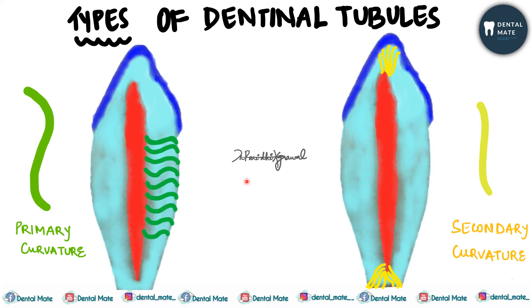It is doubly curved, has a convex course, and follows a gentle sigmoid, S-shaped path.